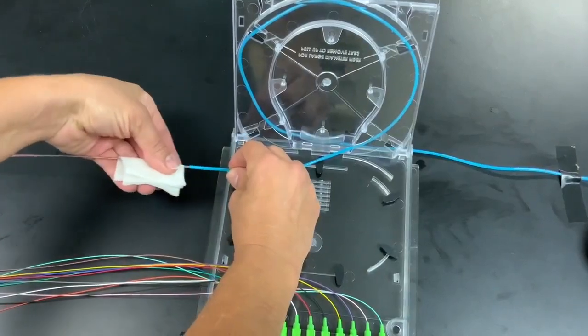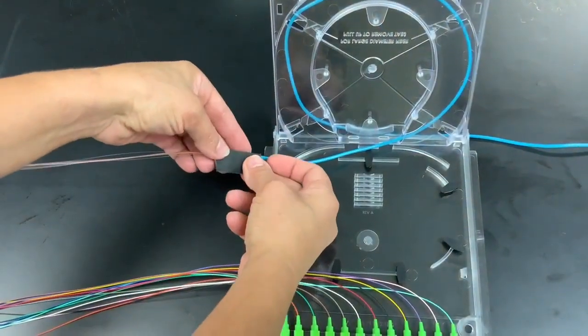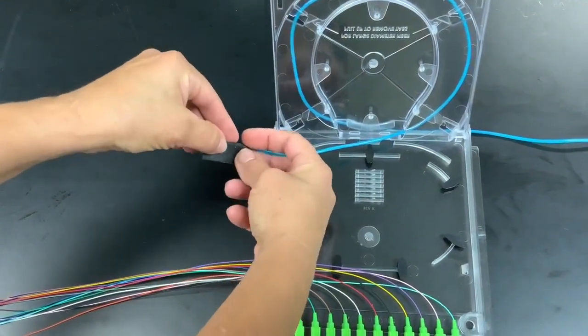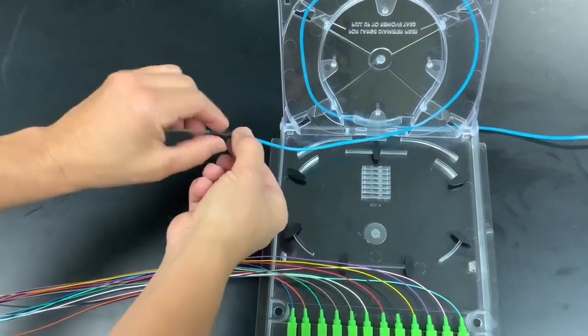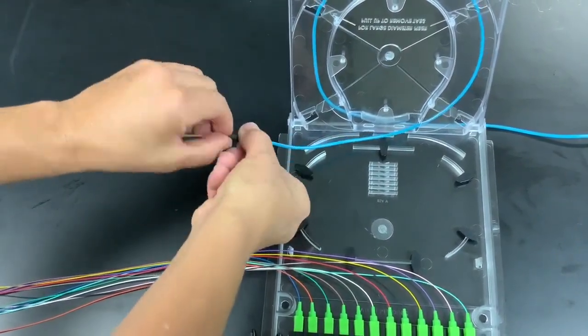Clean the exposed 62 inch 250 micron bare fibers using an alcohol damp wipe. Optionally, wrap friction tape around the buffer tube approximately 2 inches from the breakout point. When tightened, the tie wraps will grip onto the friction tape and prevent the buffer tube from sliding.